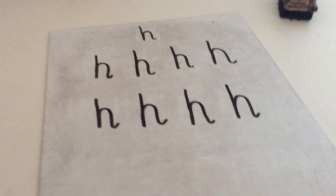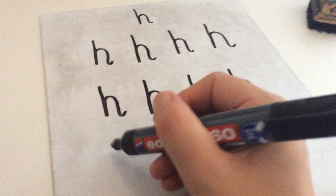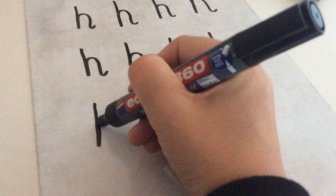Down his back, back up halfway, over and flick round. Down his back, back up, over and flick round. Down his back, over and flick round. Pick up your pencils and let's have a go at doing this together.